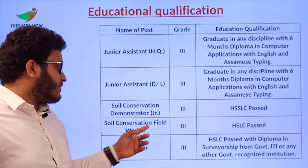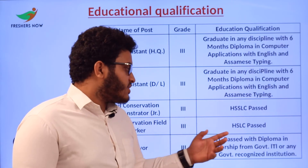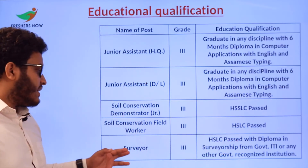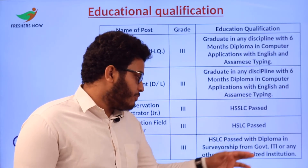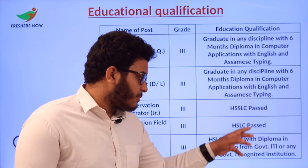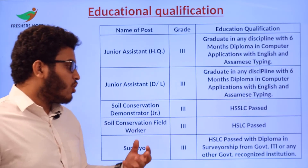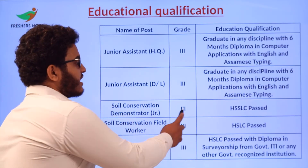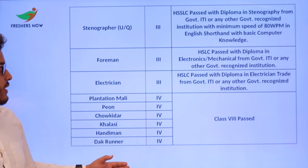Soil Conservation Field Worker Grade 3 qualification is HS/SLC passed. Surveyor Grade 3 requires HS/SLC passed with diploma in surveyorship from a Government ITA or any other government recognized institute. These are the education qualification details for each post.